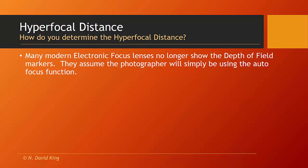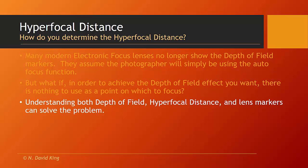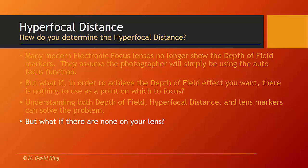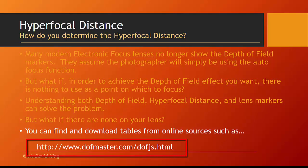Many modern electronic focus lenses don't even bother showing depth of field markers anymore — they assume the photographer is simply going to use the autofocus function, essentially turning an expensive DSLR into a heavy point-and-shoot camera. But what if you want to achieve a specific depth of field effect and there's nothing to use as a focus point? If you understand depth of field, hyperfocal distance, and the lens markers, all of that can solve your problem. But what if there are none on your lens? There are tables you can find online that you could print out, or if you have a smartphone with a Wi-Fi connection, you can look it up.